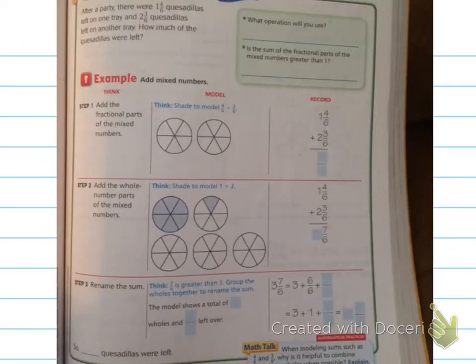Let's take this word problem. After a party, there were 1 and 4/6 quesadillas left on one tray, and 2 and 3/6 quesadillas left on another tray. How much of the quesadillas were left? Well, let's see. We need to work through this to add both mixed numbers. They're asking us to both model and record what we get.